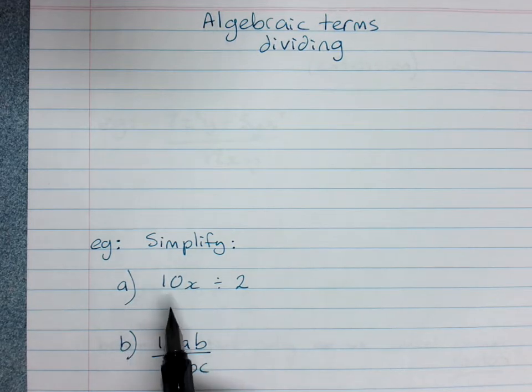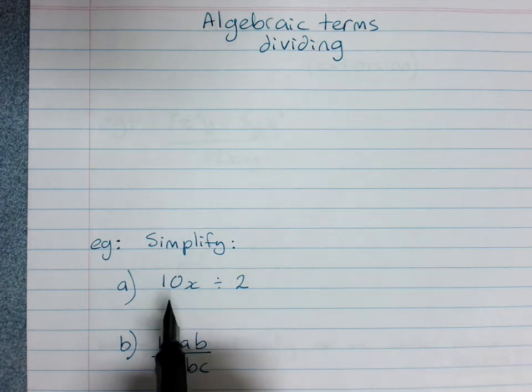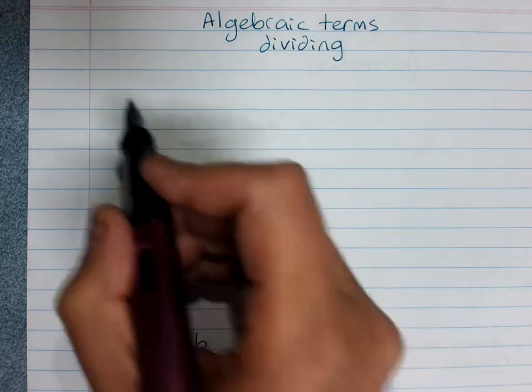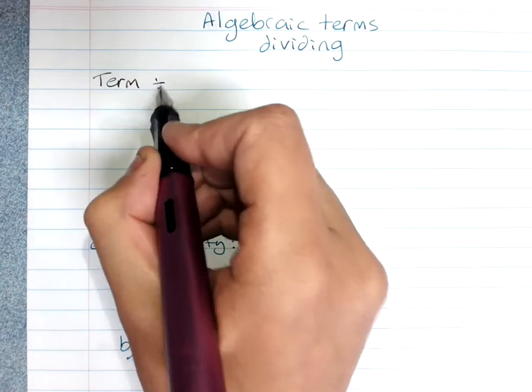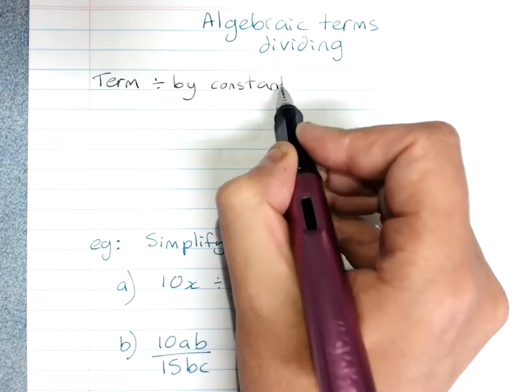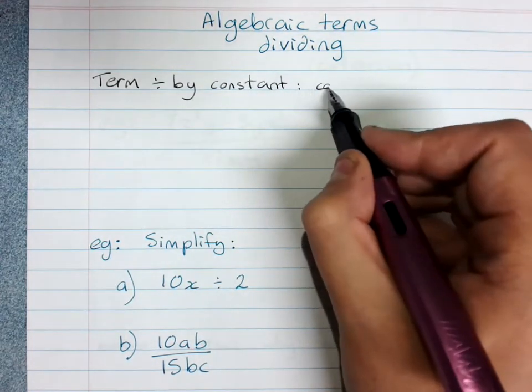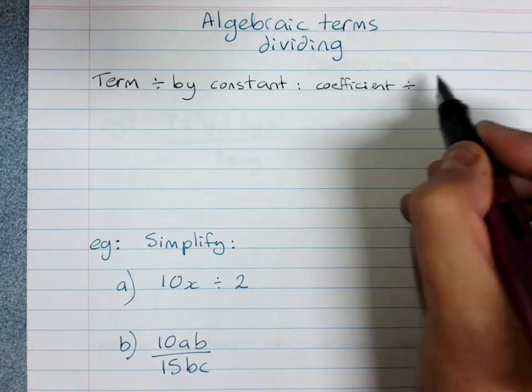If the question is pretty easy and we're just dividing a term by a number, the rule can just be the coefficient divided by the number. So for a term divided by a constant, just a number, you can just do the coefficient divided by the constant.